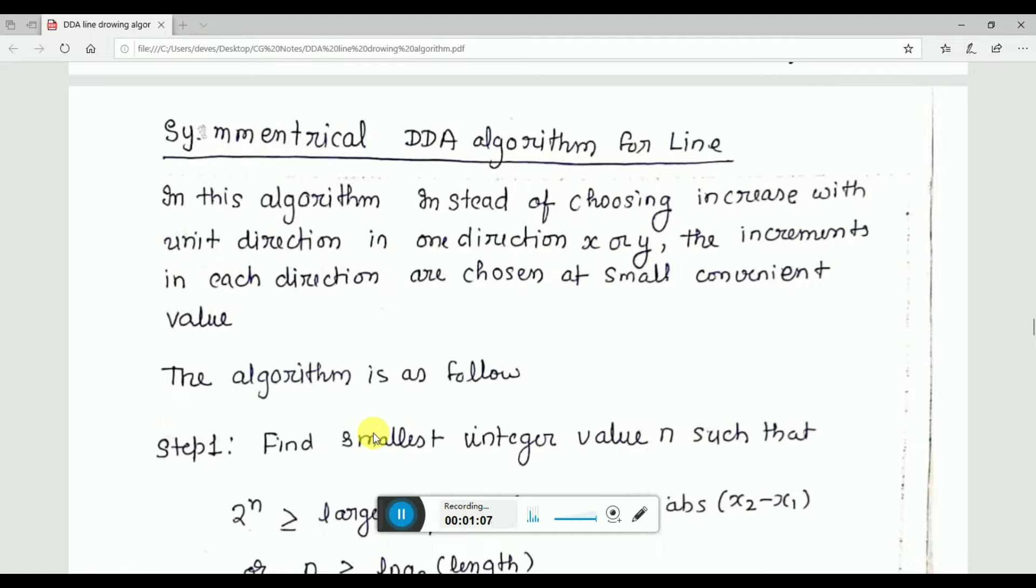If we talk about the DDA, in the case of DDA we increase either the value of x by 1 or y by 1 on the basis of the slope. We decide that if x is increased by 1, then we increase y by m, and if y is increasing by 1, then we increase the value of x by 1 by m.